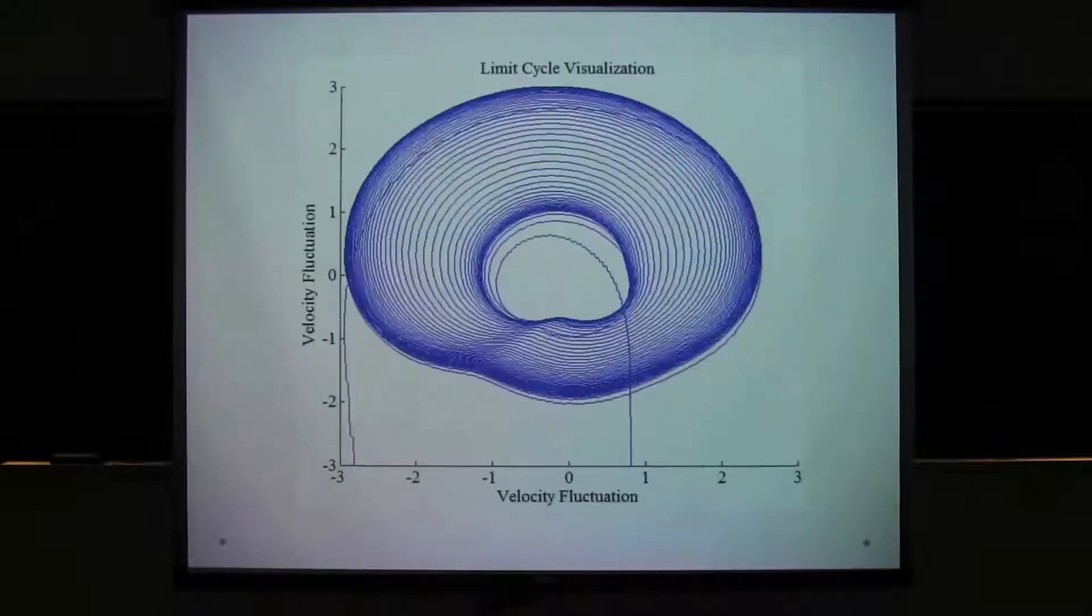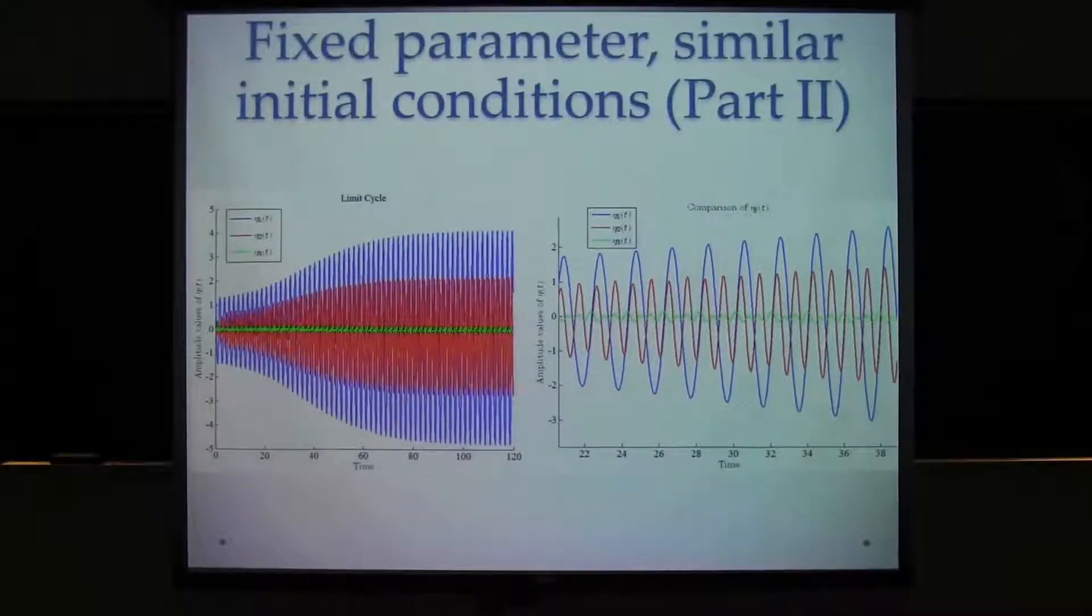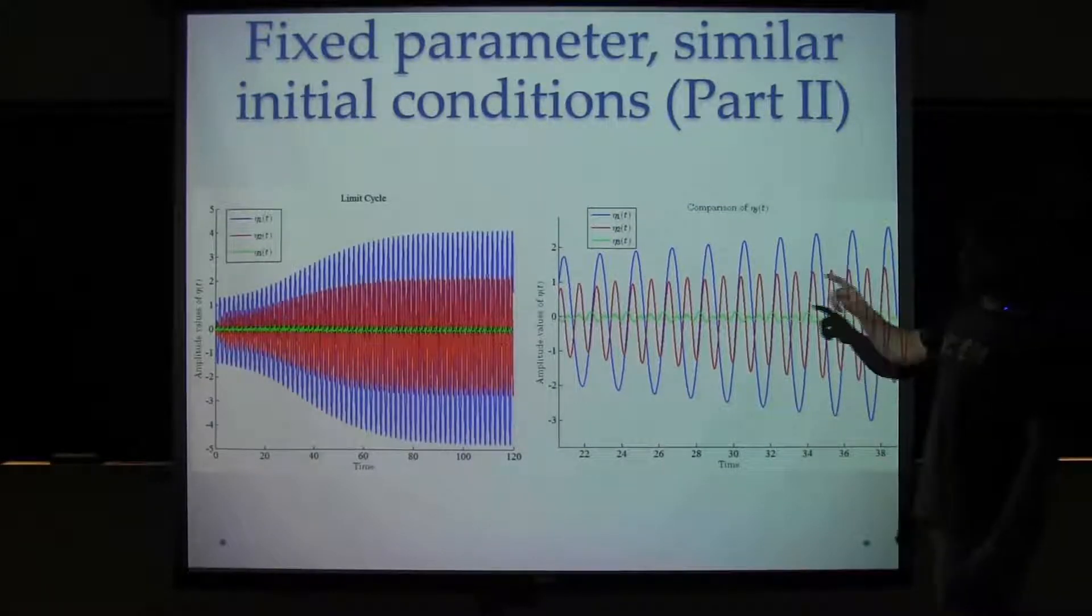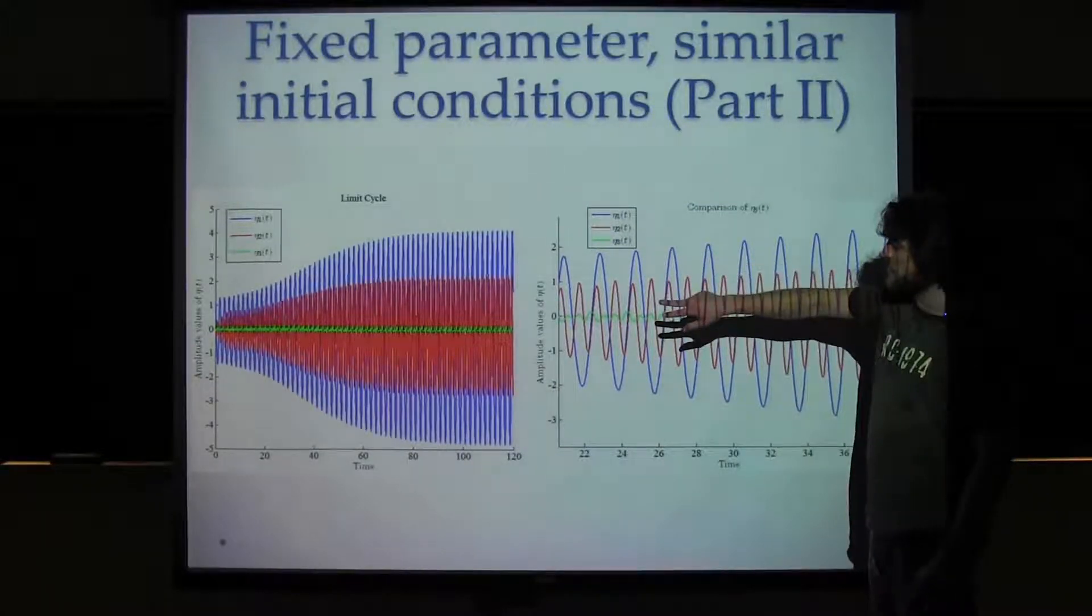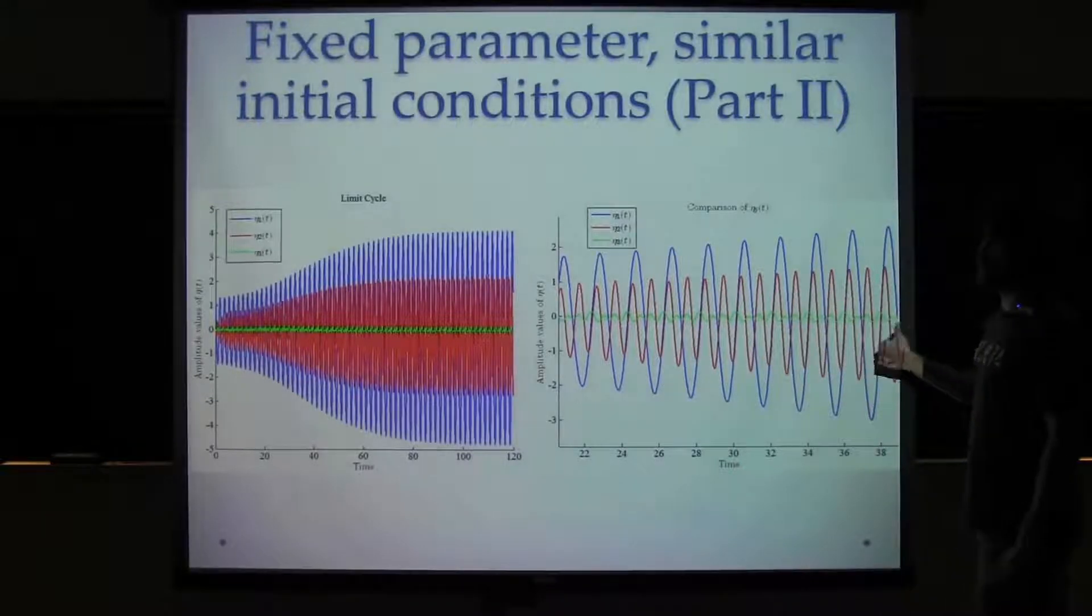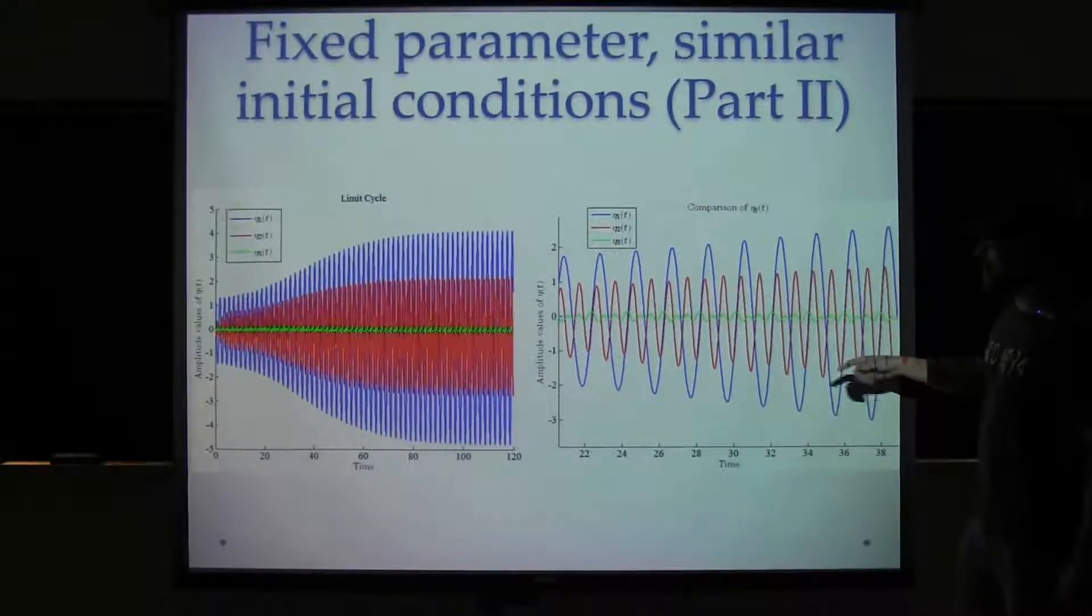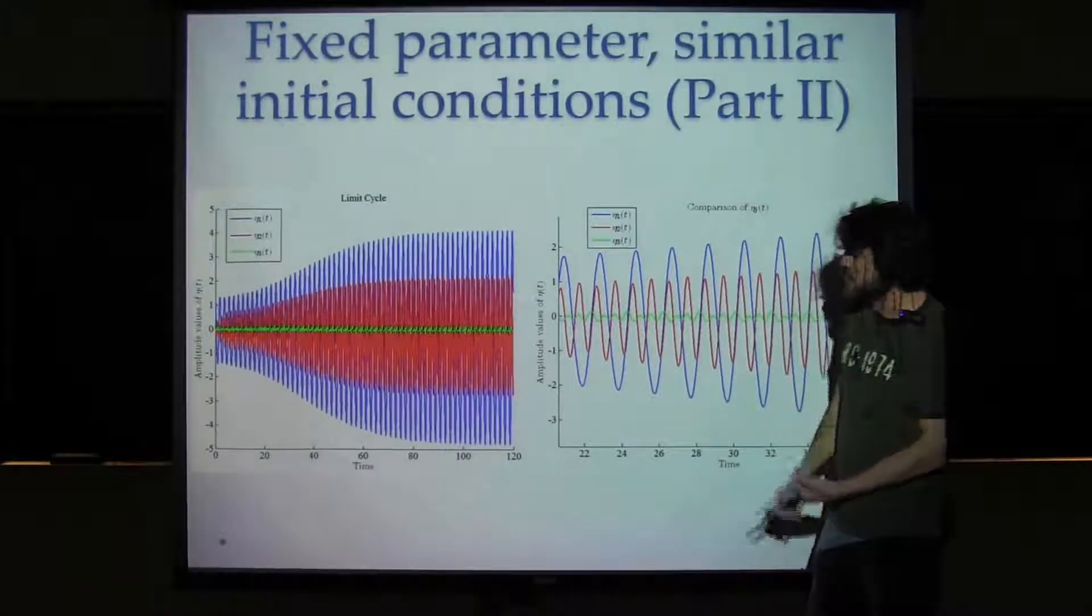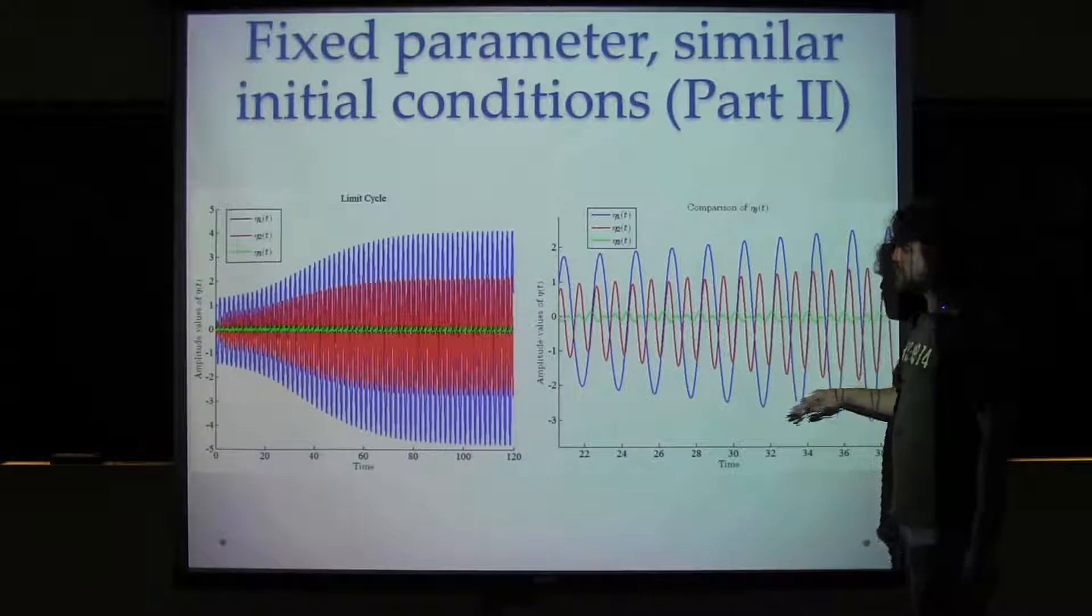But then I took the eta approach. This was all velocity. But the thing is, I'm solving for eta. So, I'm trying to understand what I'm looking at, really. So, I did the solution and then I plotted each of these etas. And on the next slide, I'm going to show you what I try to see in that limit cycle. The largest contribution comes from the first eta and then the second and then the third, respectively.